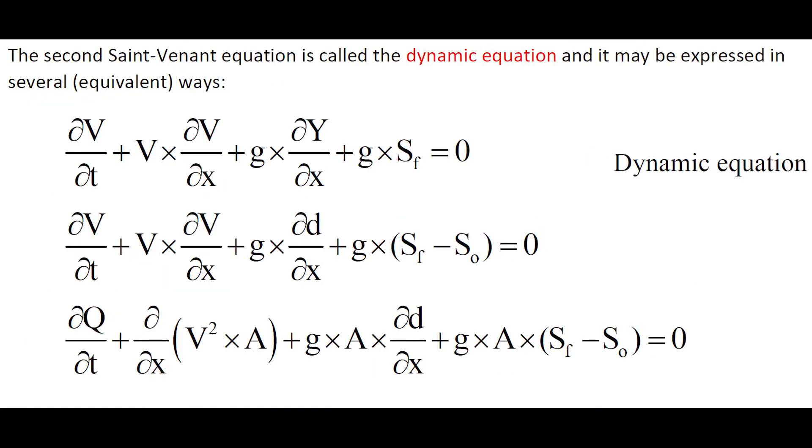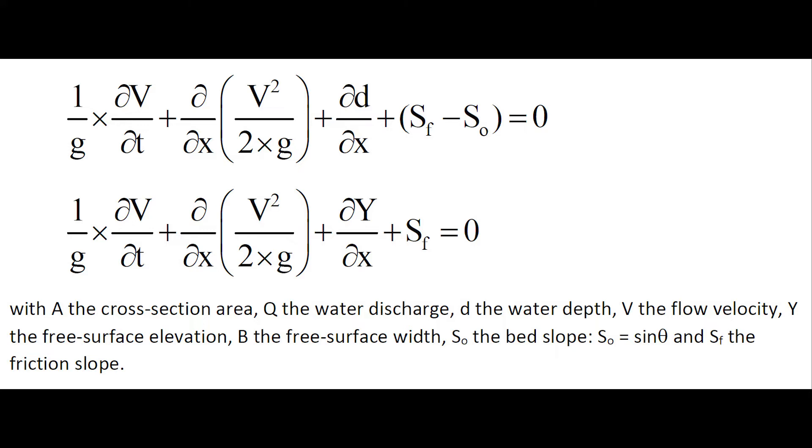The second Saint-Venant equation is called the dynamic equation. It may be expressed in several equivalent ways, with first three expressions and another two expressions.